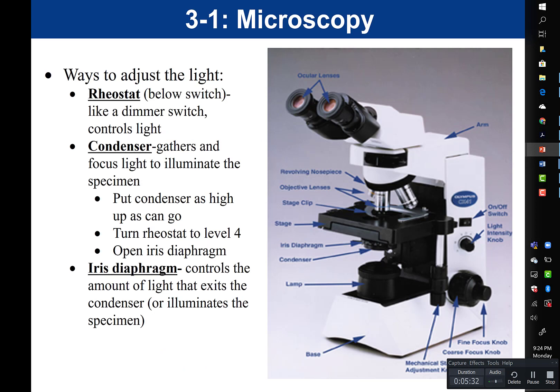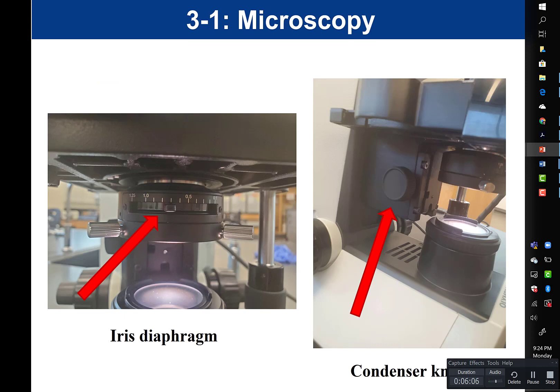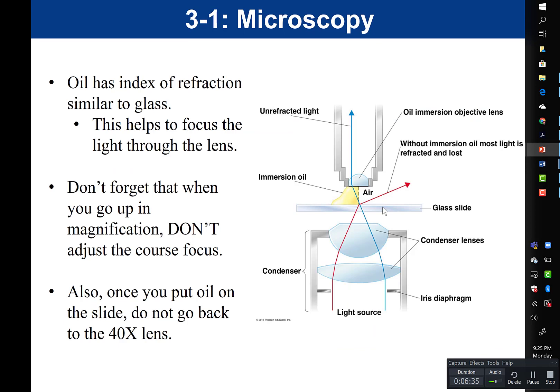You want to know the different ways to adjust light. The rheostat acts like a dimmer switch and controls the light. The condenser's job is to gather and focus light to illuminate the specimen. The iris diaphragm is a little lever on the condenser, and its job is to control the amount of light that exits the condenser. The condenser knob moves the condenser up or down. You want to know what each of these parts does in terms of adjusting light intensity.